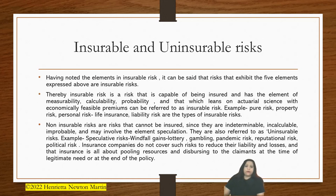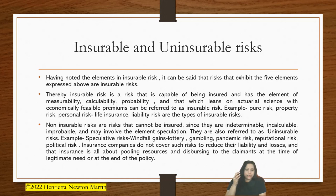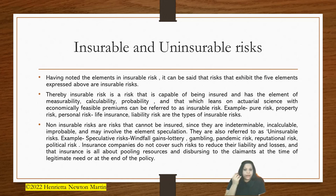Now, having noted the elements of insurable risk, it can be said that risks that exhibit those five elements are insurable risks — that is, capable of being determined, calculable, measurable, probable, leaning on actuarial science, with economically feasible premiums. Examples include pure risk, property risk, and personal risk. Liability risks are also types of insurable risks that are interactive in nature.